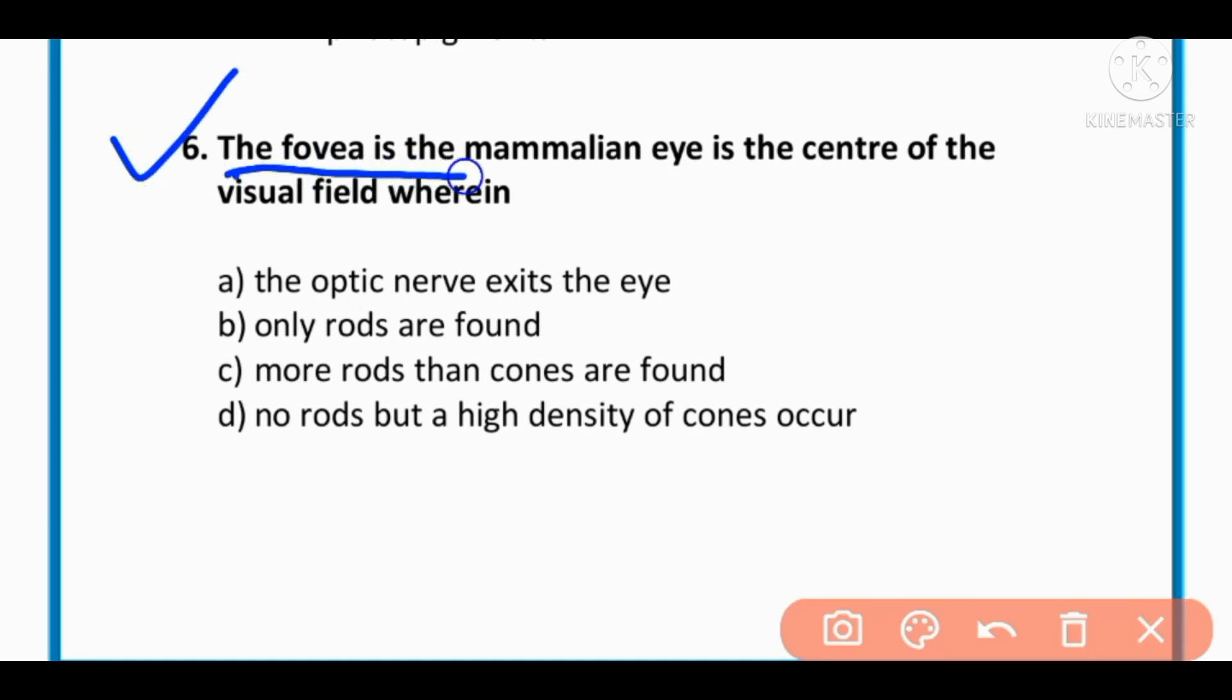MCQ number 6: The fovea in a mammalian eye is the center of the real field where the optic nerve exits the eye. Only rods are found, more rods than cones are found, or no rods but high density of cones occur. The correct option is D: no rods but high density of cones occur.